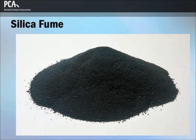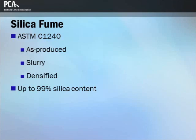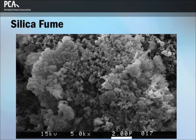Silica fume is the ultrafine amorphous silica produced in electric arc furnaces as an industrial byproduct of the production of silicon metals and ferrosilicon alloys. Silica fume for use as a pozzolanic material in concrete may be supplied in one of three forms in accordance with ASTM C1240: as-produced, in which it is an ultrafine powder; slurry, where the powder is suspended in water; and densified, where the silica fume is allowed to flocculate and form a coarser powder. Silica fume is composed of very tiny spherical amorphous particles with an average diameter of 100 nanometers.